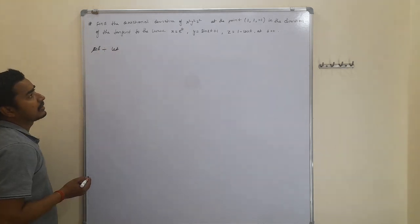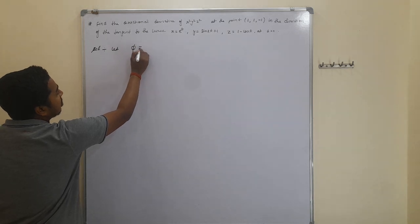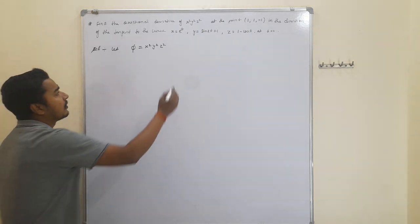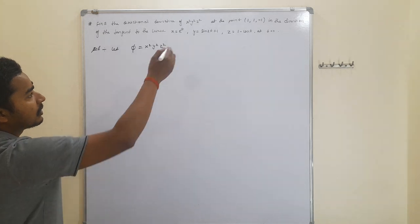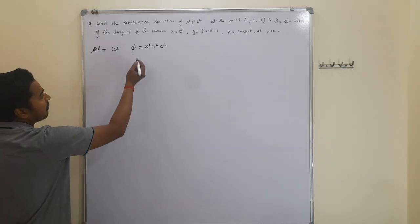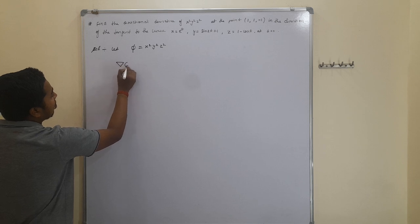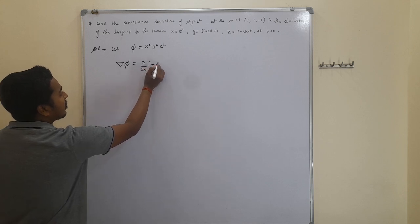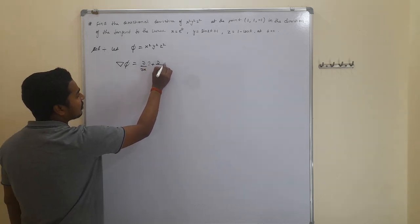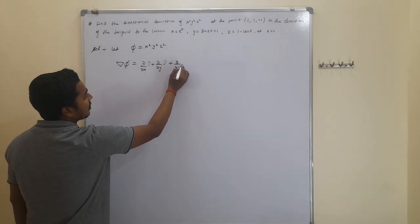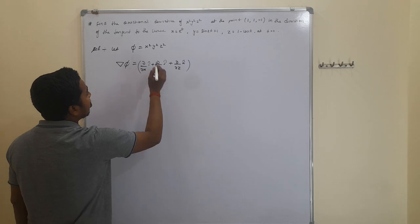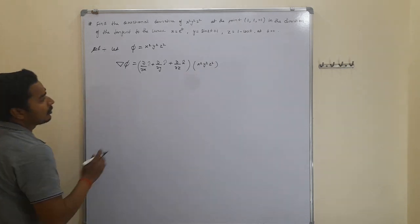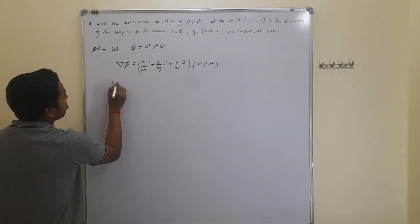Let φ = x² y² z². First we have to find the gradient ∇φ, which is given by (∂/∂x)î + (∂/∂y)ĵ + (∂/∂z)k̂ applied to φ = x² y² z².